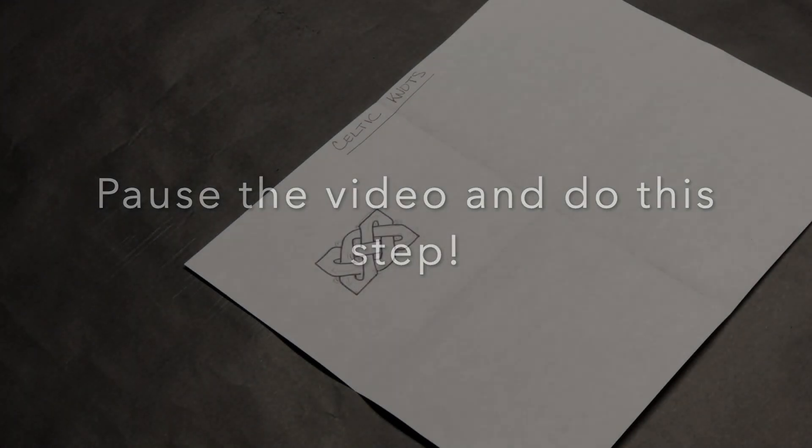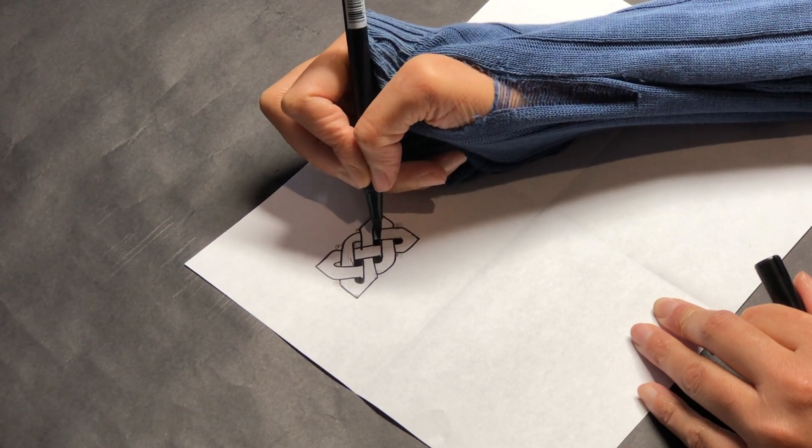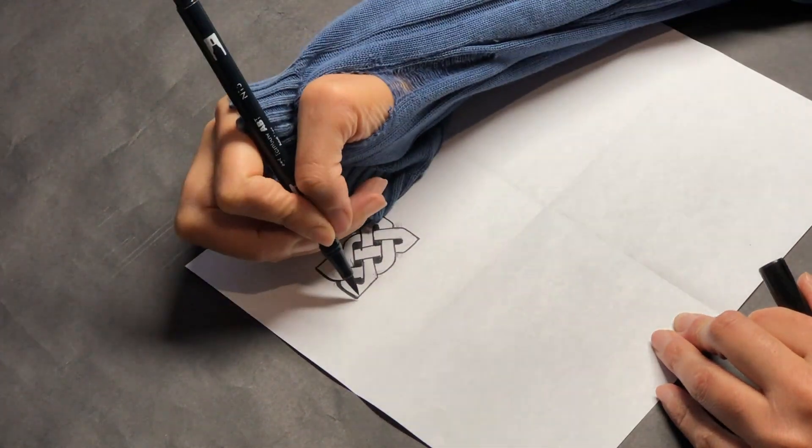After you have traced over your work, go ahead and fill in the spaces between the weaves. That's our circles within a circle. And then add an outline to the perimeter.